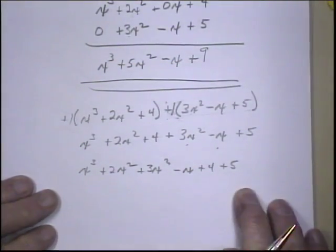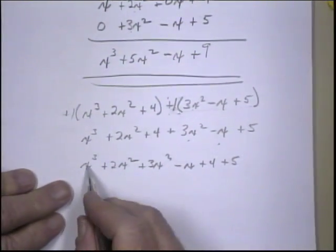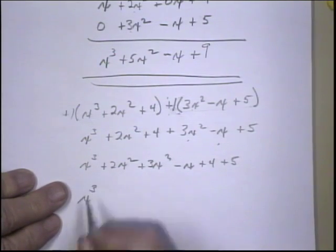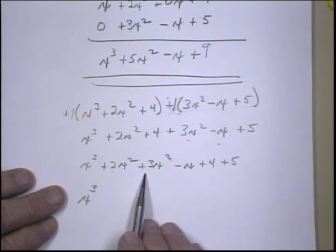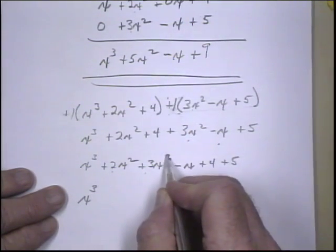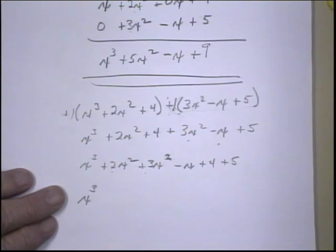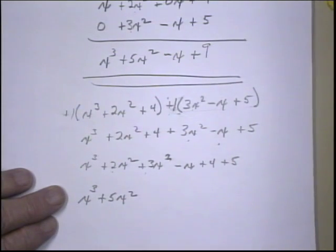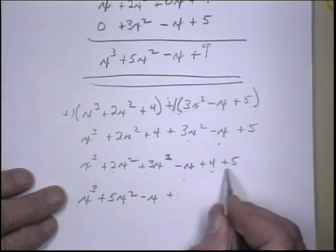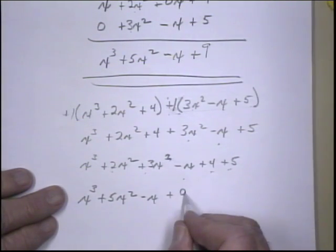Now, we can combine like terms. There's only 1x cubed, so there's only one of that kind of term, but we have a 2x squared plus a 3x squared. This is a squared. Might get a little sloppy sometimes. So 2 and 3 is 5. That's 5x squared minus the single x plus 5 and 4 is 9.